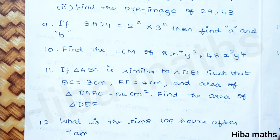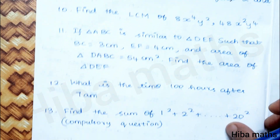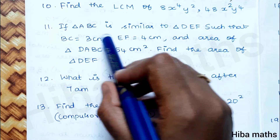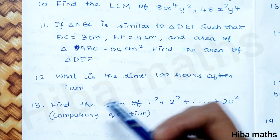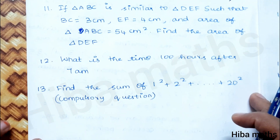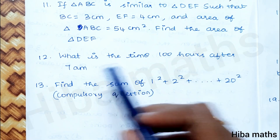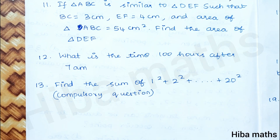Focus on the first two lessons — you will have studied four topics in those lessons. The 11th question: triangle ABC is similar to triangle DEF. Find the area of triangle DEF given the similarity conditions.